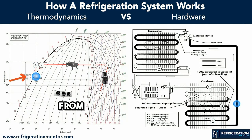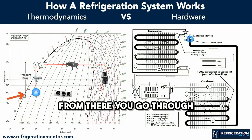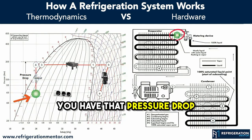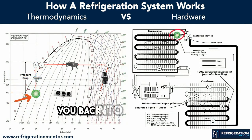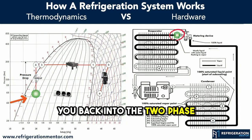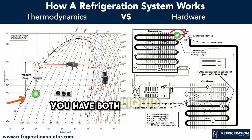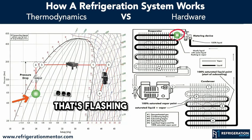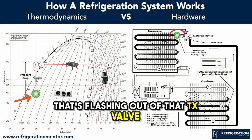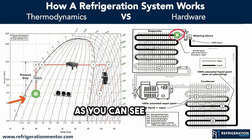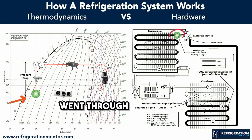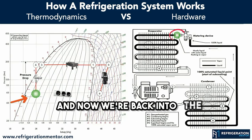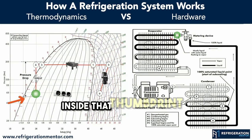From there, you go through your metering device. You have that pressure drop, which pulls you back into the two-phase. You have both liquid and vapor, and it's flashing out of that TX valve. As you can see, it just went through the metering device and now we're back into the two-phase inside that thumbprint.